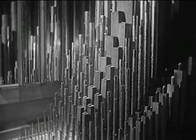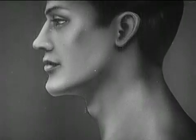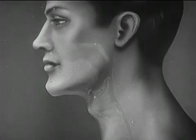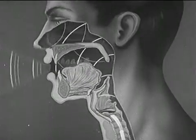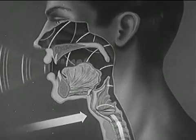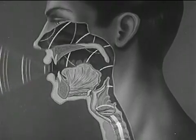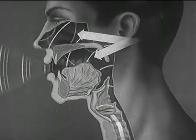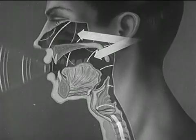Besides woodwind instruments and organ pipes, another mechanism that depends upon a vibrating column of air for its sound is the vocal mechanism of man. Sound waves result from vibrations of air that start in the vocal folds of the trachea. These waves are reflected back and forth in the cavities of the mouth, nose, and head, thus producing the complex sounds of speech and song.